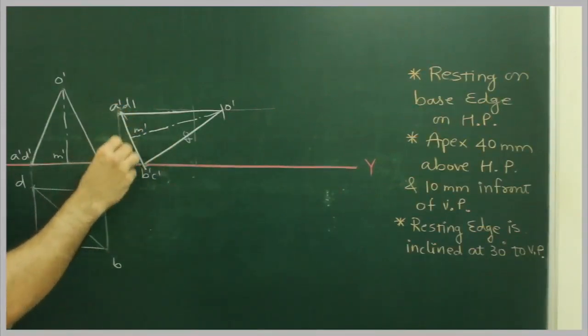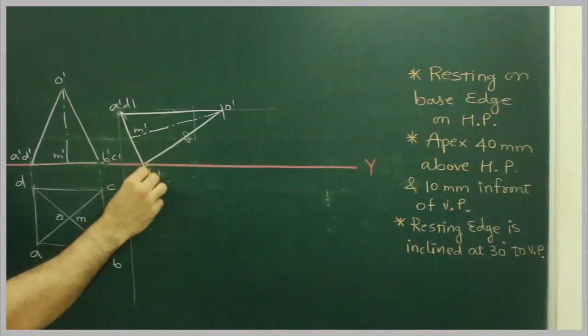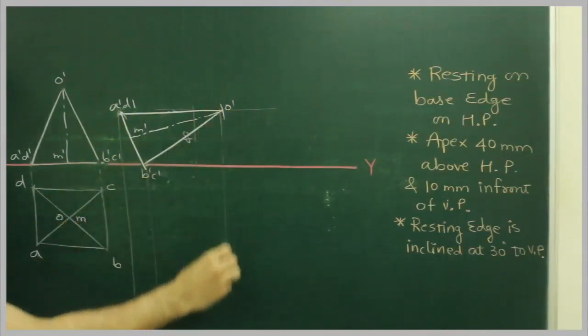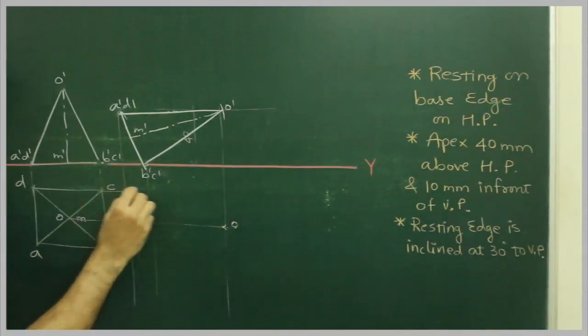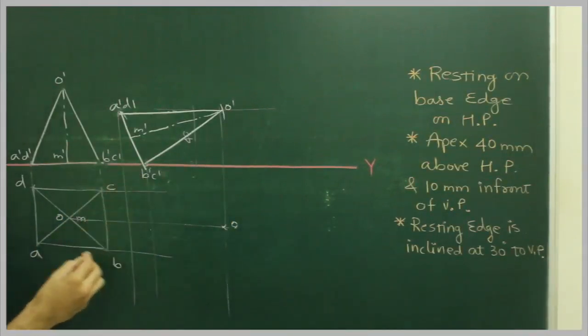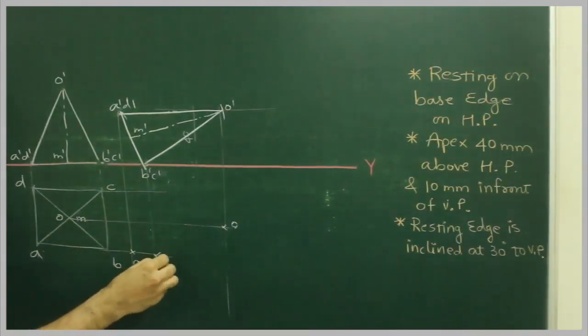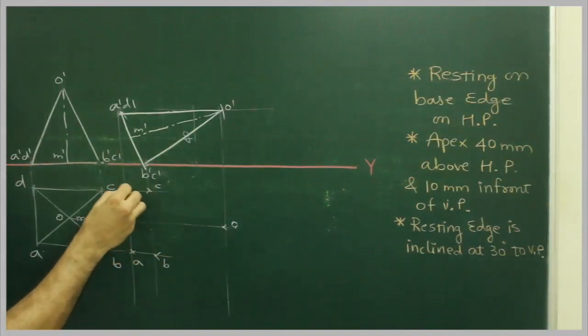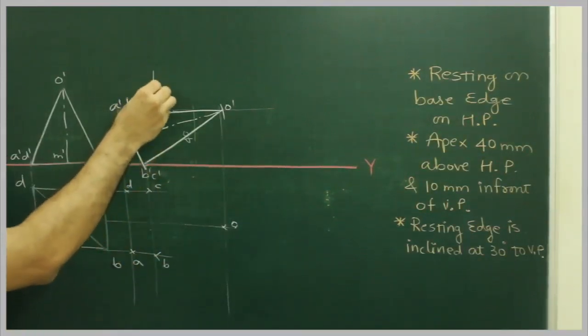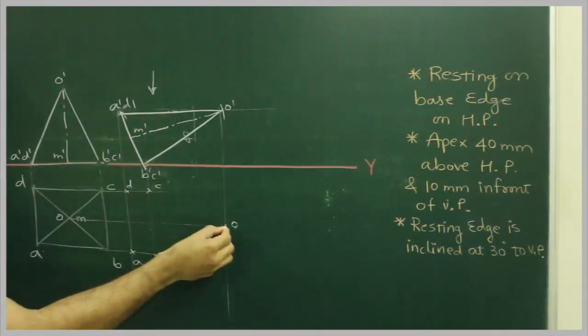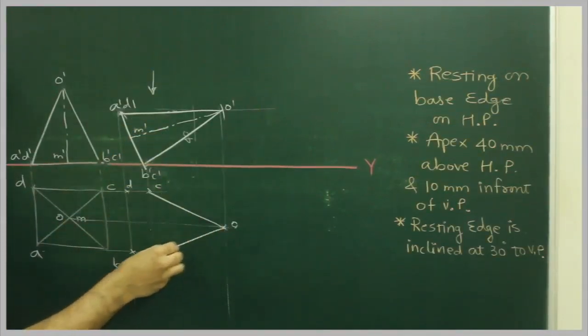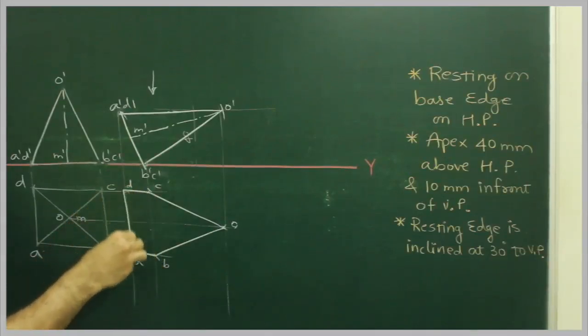After that, the next time is A dash B dash down, B dash to C dash down, O dash now. From here the next time O, so this is A, B, C, D. When you see from the top, when the observer will see from the top, from here, so O C, O B, the extreme boundary will be down.